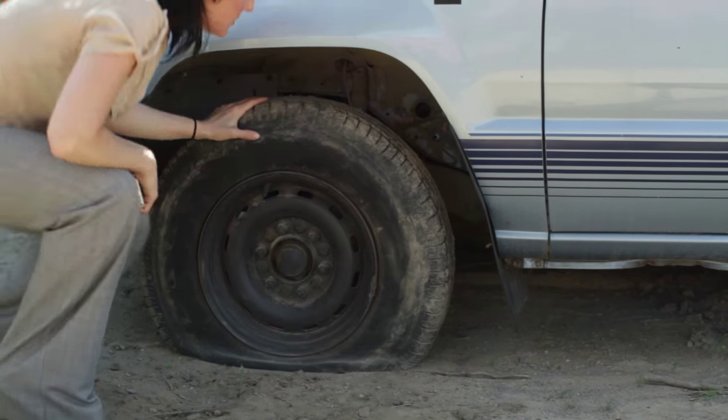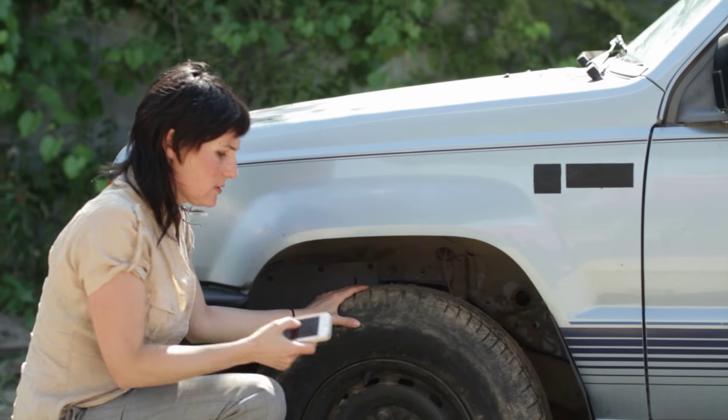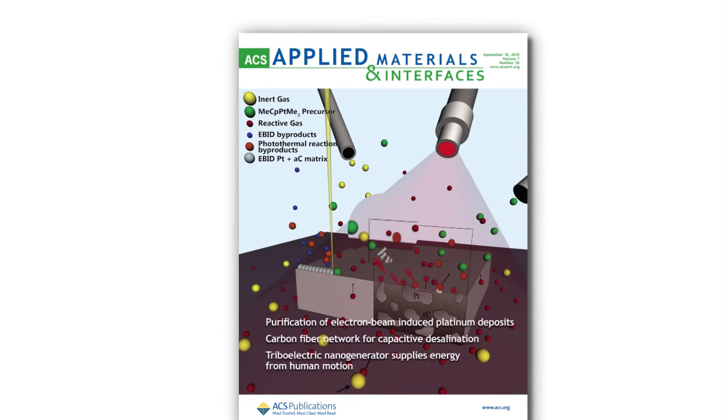Chemists in Dresden, Germany have modified tire rubber so it can recover its elasticity without the normal steps of rubber manufacturing. They published their research in ACS Applied Materials and Interfaces.